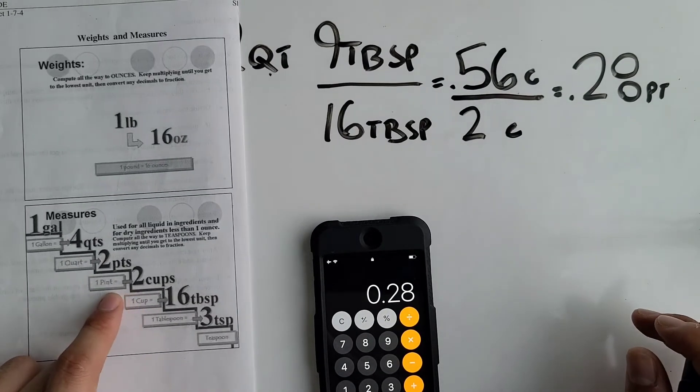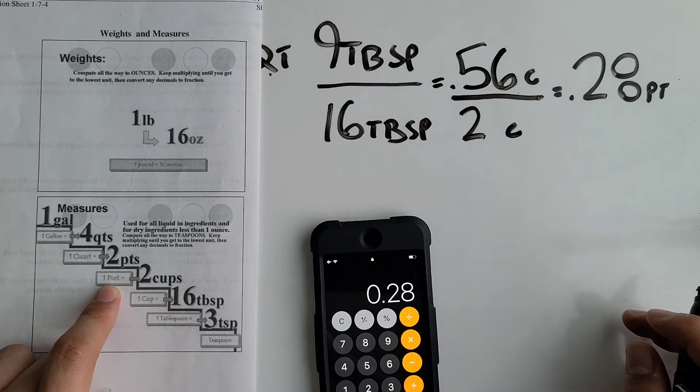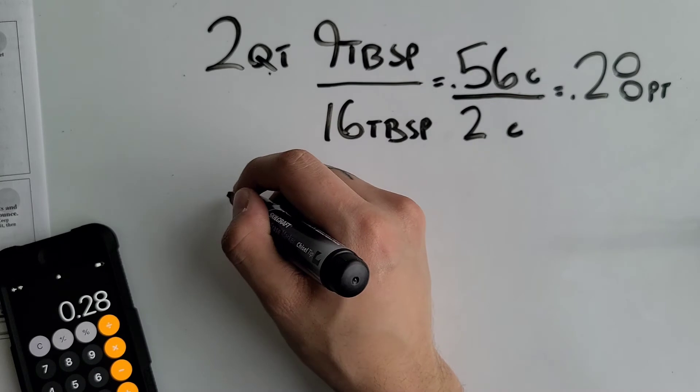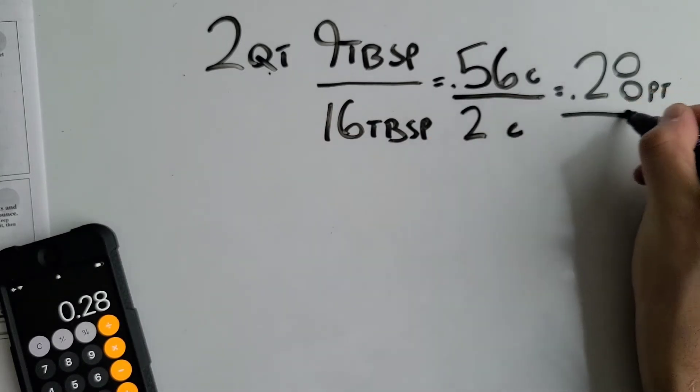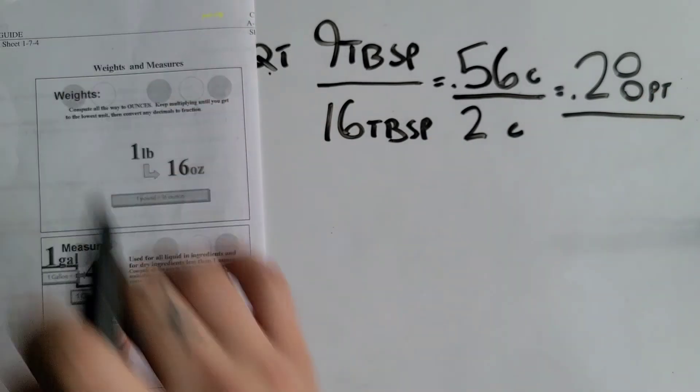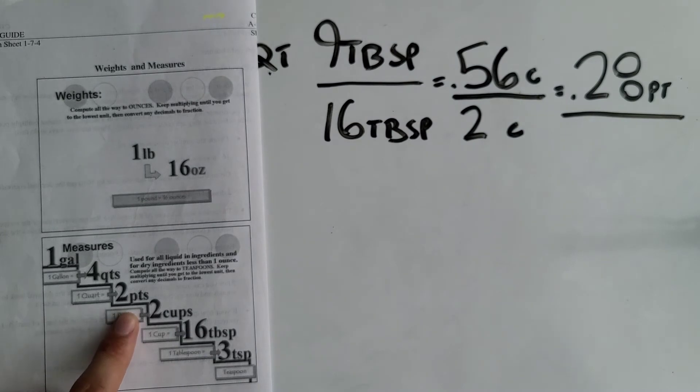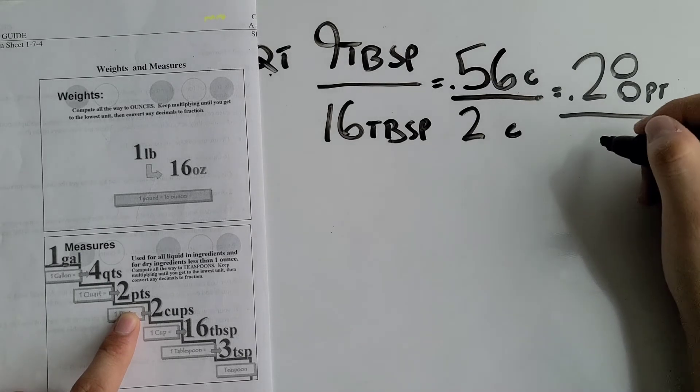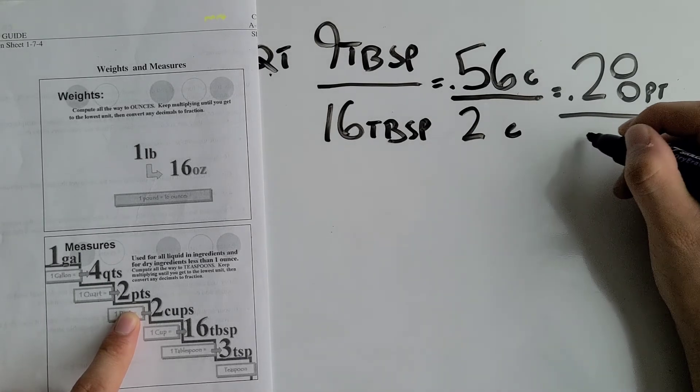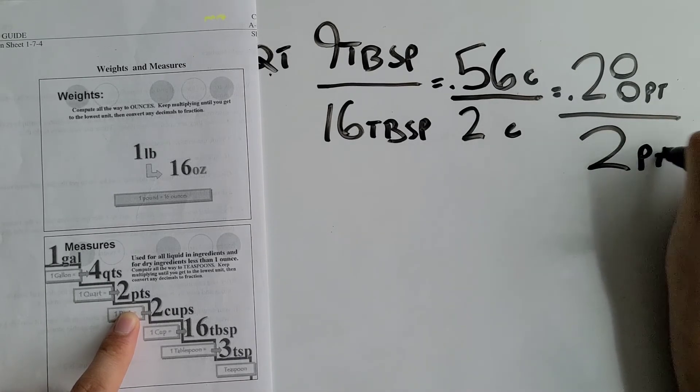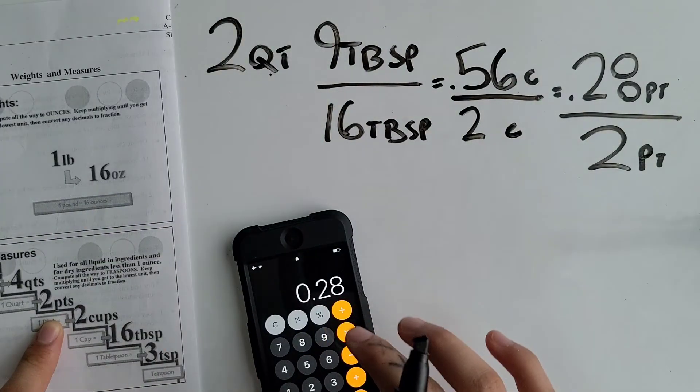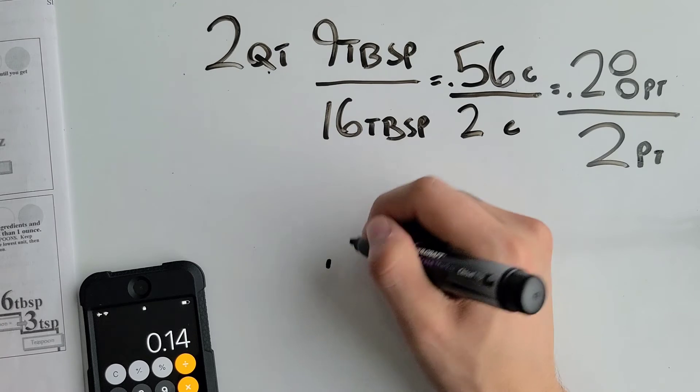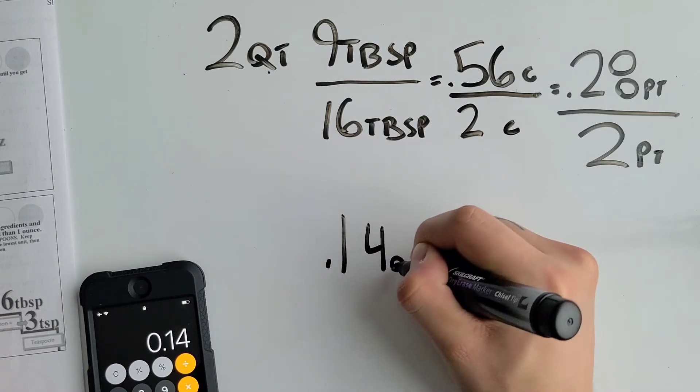We're at pints right now but we're still not at quarts yet. So then you divide this by the two pints so we could convert it into quarts. So 0.28 divided by two pints would equal 0.14 quarts.